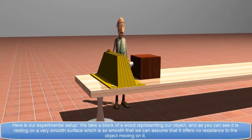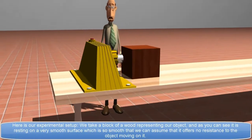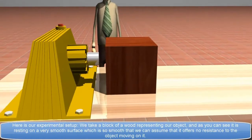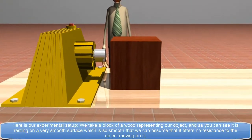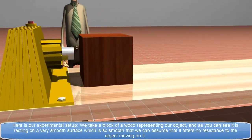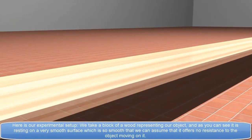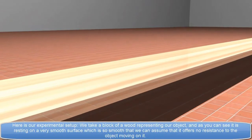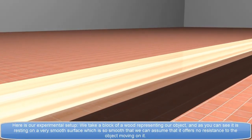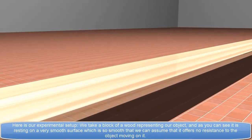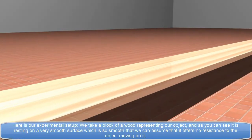Here is our experimental setup. We take a block of wood representing our object and as you can see it is resting on a very smooth surface which is so smooth that we can assume that it offers no resistance to the object moving on it.